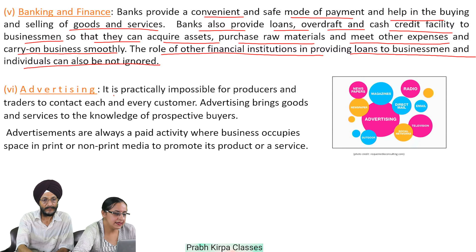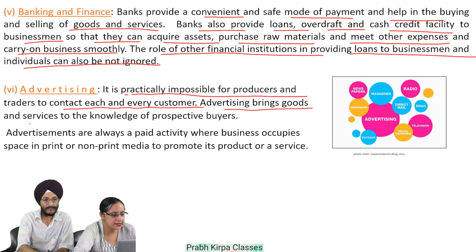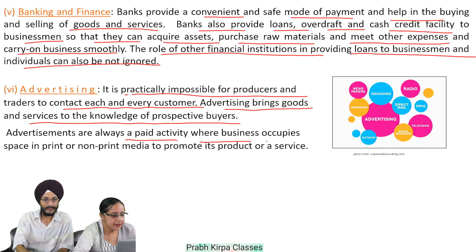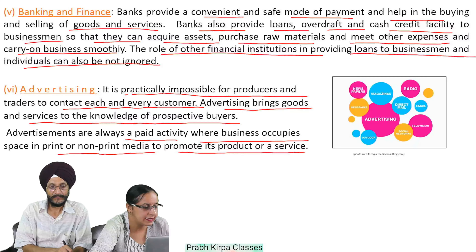Number 6, advertising: it is practically impossible for producers and traders to contact each and every customer. Advertising brings goods and services to the knowledge of prospective buyers. Advertisements are always a paid activity where a business occupies space in print or non-print media to promote its product or service.